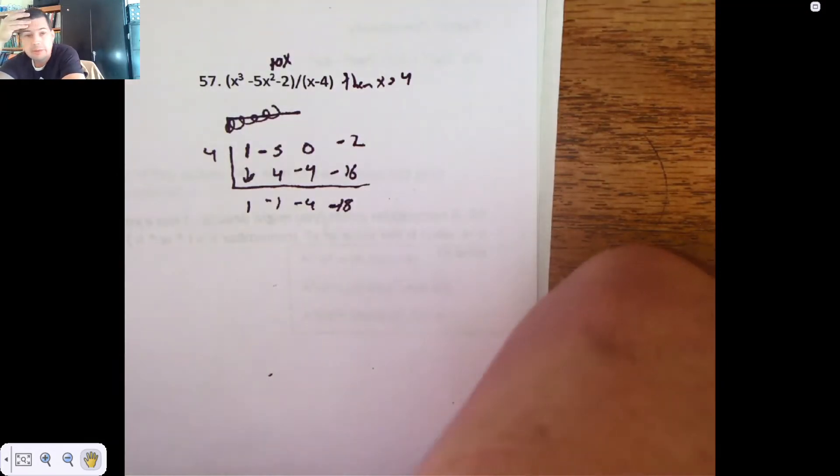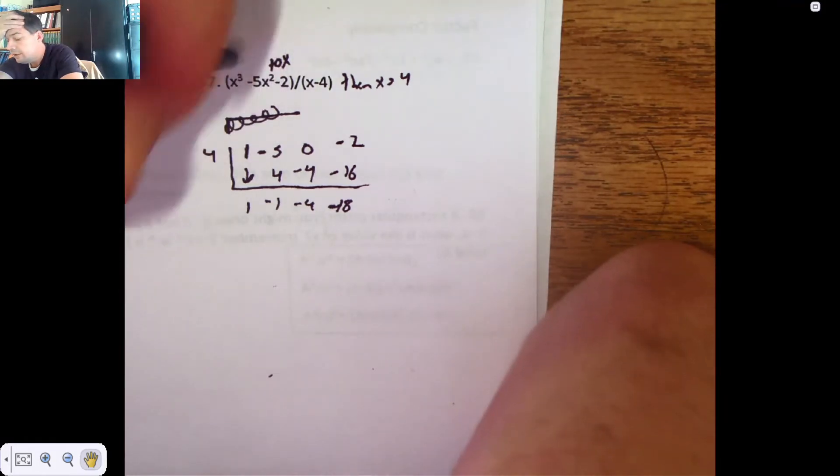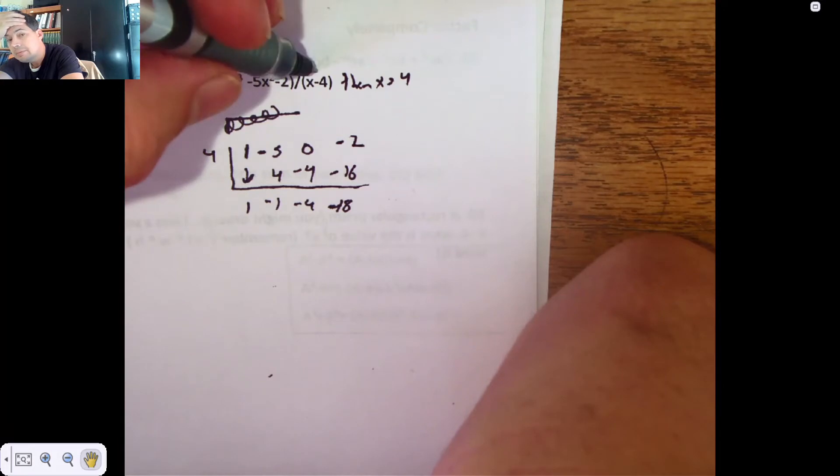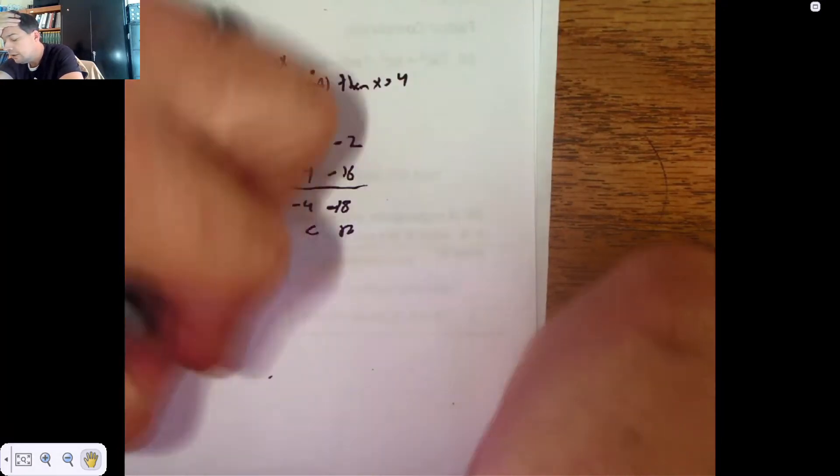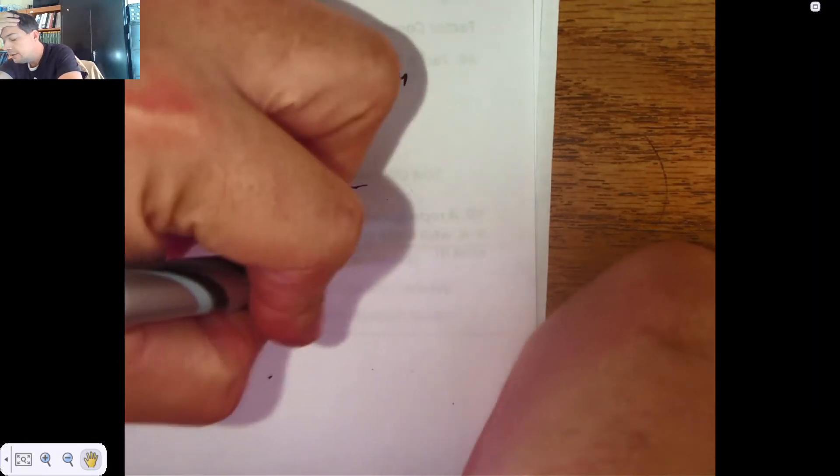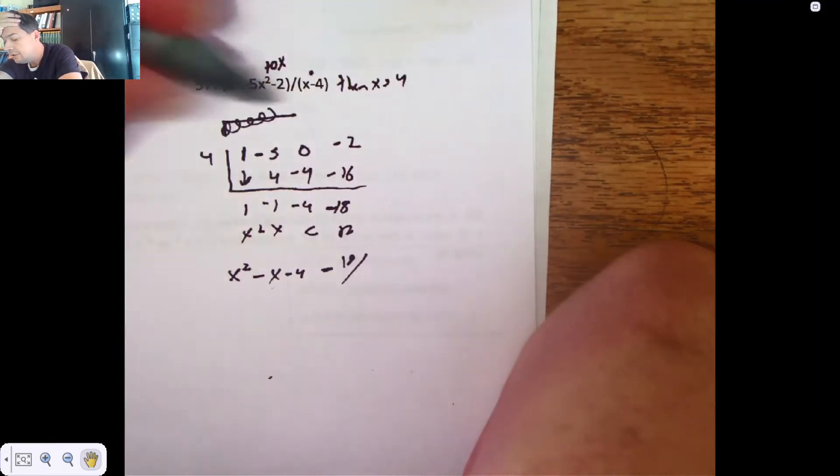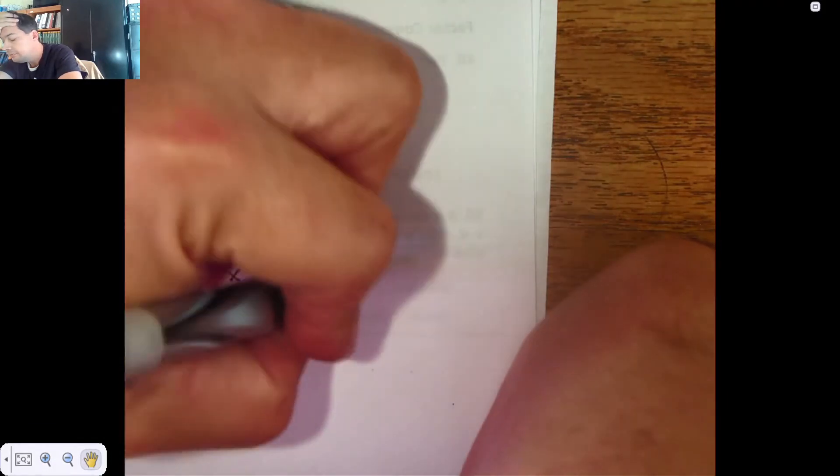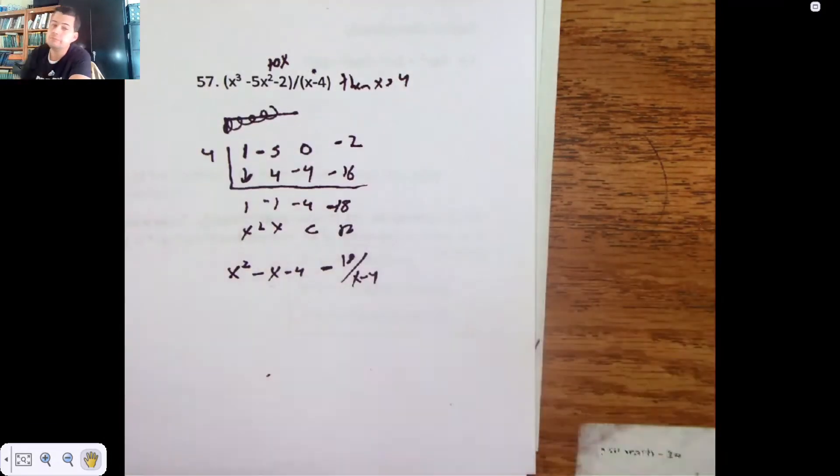We get negative 18 as a remainder. So it turns out that x cubed minus 5x squared minus 2 divided by x minus 4 is x squared minus x minus 4, take away 18 pieces of x minus 4. Simple enough.